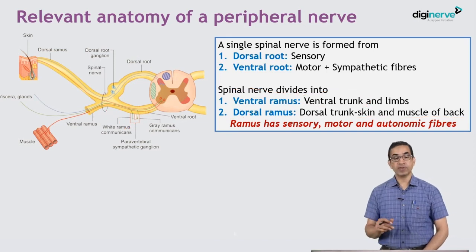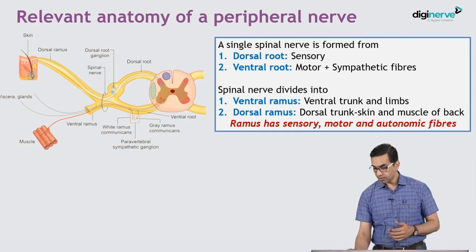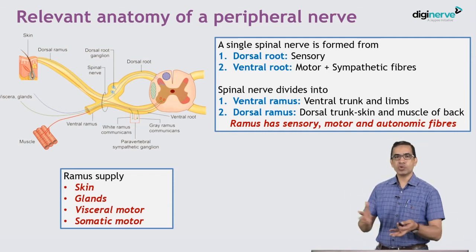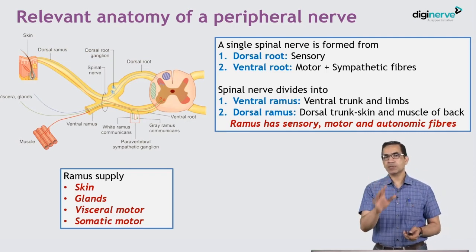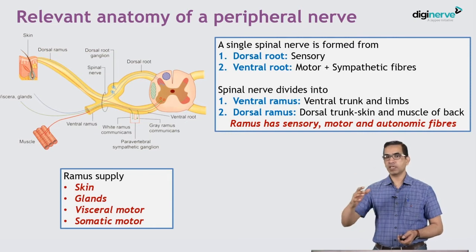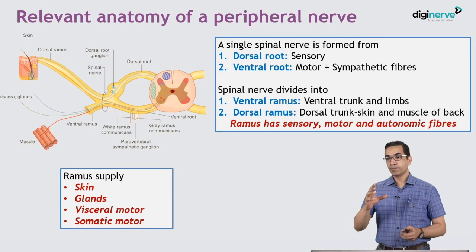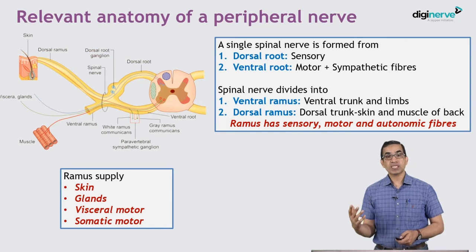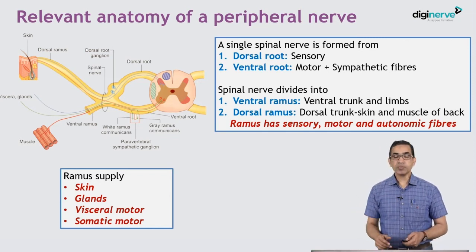Whether you see the ventral ramus or the dorsal ramus, it has got sensory, motor, and autonomic fibers which supply the skin, glands, and visceral and somatic motor. These basic things are extremely important for you to understand nerve pathophysiology and the clinical manifestations. It's not like you start the peripheral nervous system examination and jump straight into the axillary nerve, radial nerve, wrist drop, and clawing — that's not the way. Neurological pathologies are very mathematical; if you've understood the first concept, the larger concept follows easily. But unless you know how these nerves are formed, what they supply, and which area they supply, it's difficult to do the further examination.